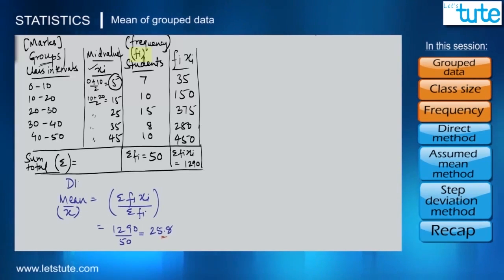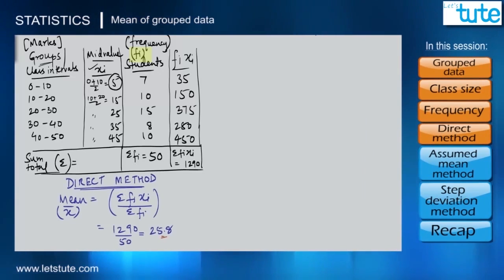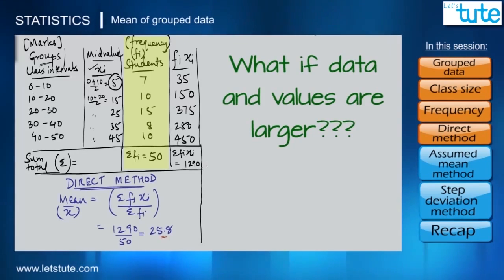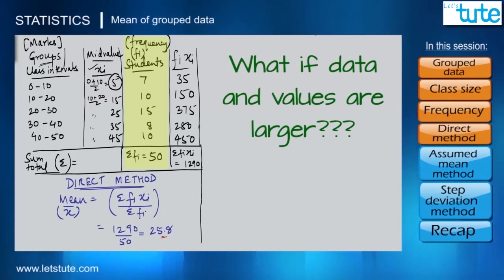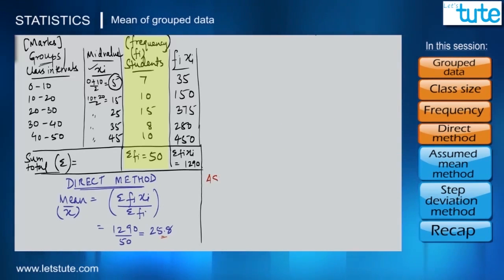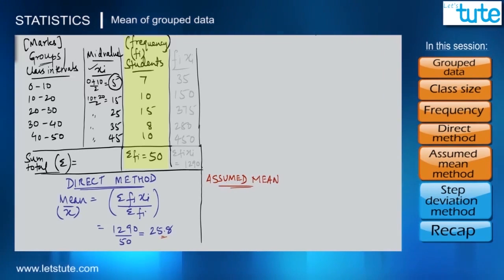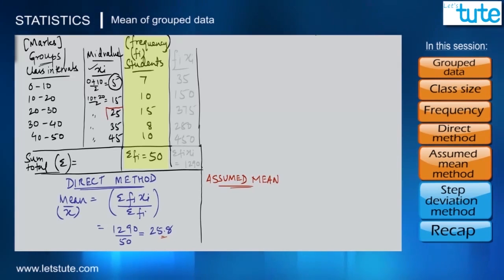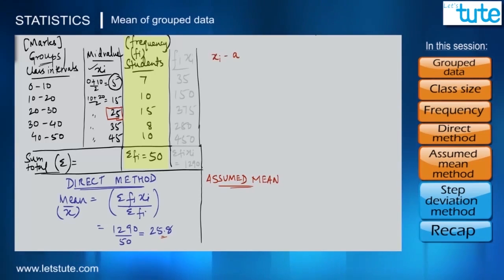We find the mean by dividing Σfi·xi by Σfi, giving 1290 ÷ 50 = 25.8. When we find the mean this way, we call it the direct method. This method is not very different from the conventional method — we are just taking frequency into consideration. However, when data values are heavy and large, the direct method still leads to heavy calculations, so we have another method for rescue: the assumed mean method.